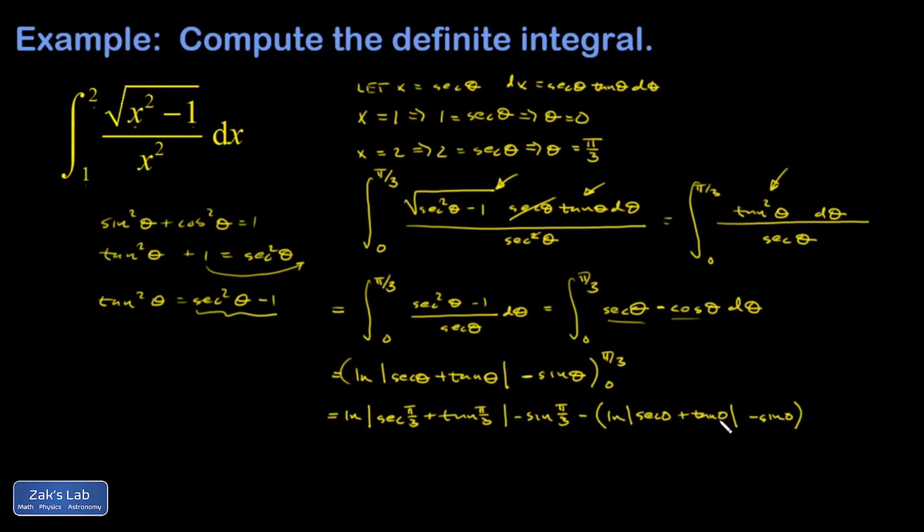A lot of this stuff is zero over here. The tangent of zero is zero. Sine of zero is zero. And the secant of zero, that's one over the cosine of zero. That's one. And the natural log of one is zero. So the whole thing is gone.